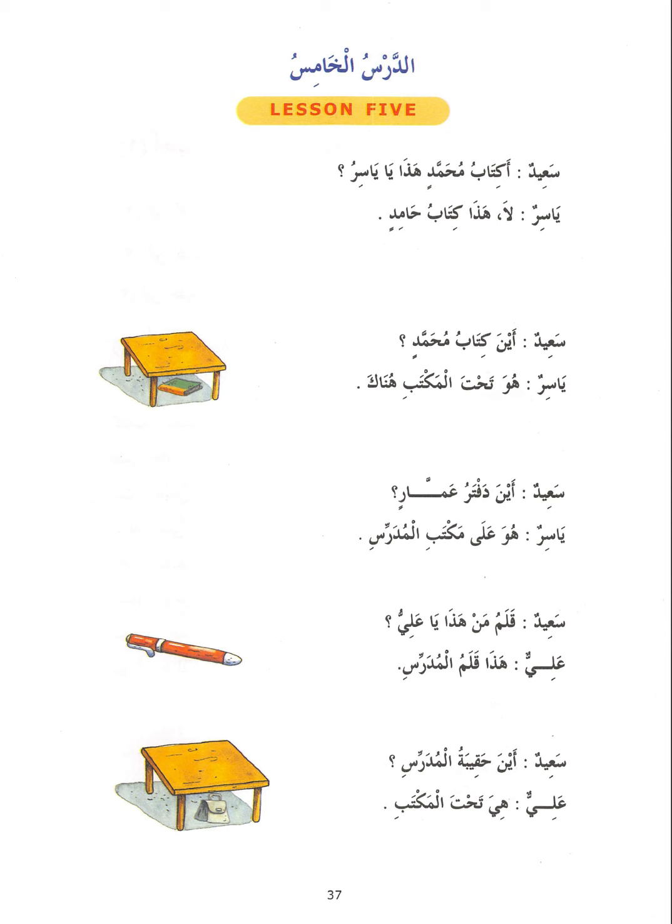As-salamu alaykum wa rahmatullahi wa barakatuh. This is our fifth lesson going through the revision of Medina Arabic book number one. We have arrived at lesson number five, and the main topic that's going to be discussed is the mudhaaf mudhaafun ilayh — the possessive relationship that can occur between two nouns.